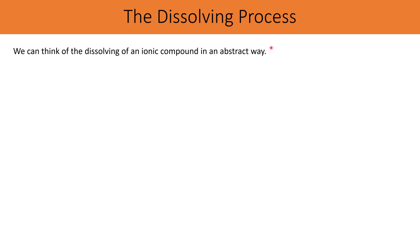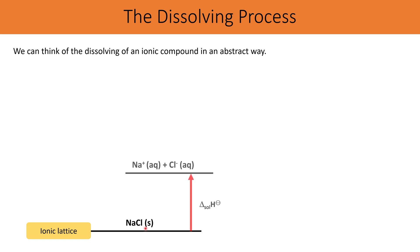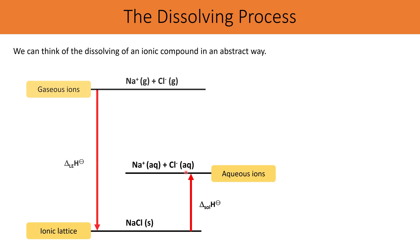We can imagine the dissolving process using a Born-Haber cycle. Starting with the solid ionic compound, you measure the temperature change upon dissolving, use q = mcΔT to get q, divide by 1000 to get kilojoules, then divide by n moles of compound dissolved to get the enthalpy change of solution — going from the solid ionic compound to aqueous ions.